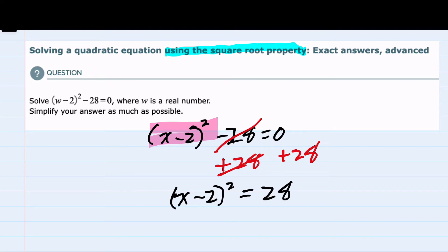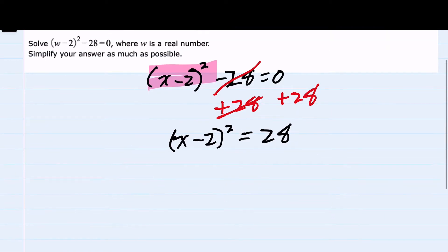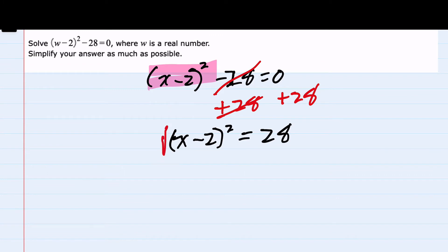And at this stage, we can apply the square root property by taking the square root of each side of the equation. And the reason I'm doing so is because on the left hand side, the square root and the square will cancel.